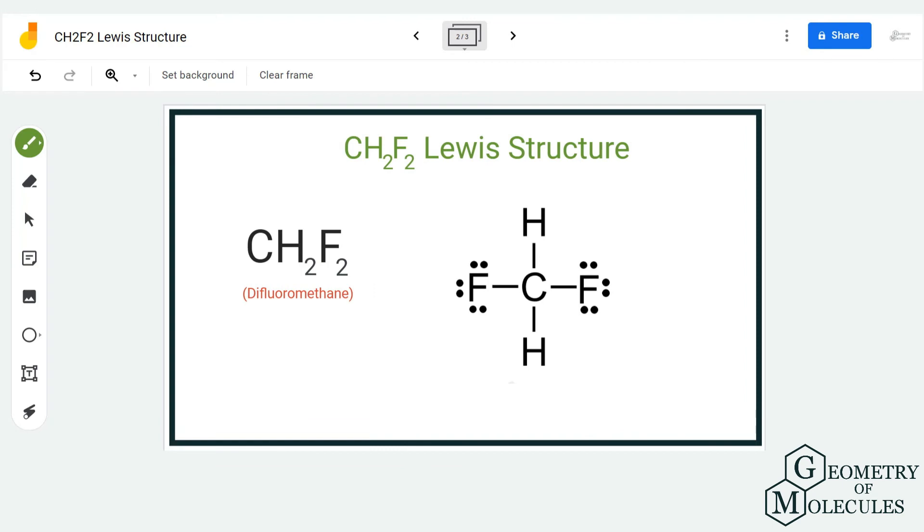Now let's see if the octets are complete. Fluorine atom here has eight valence electrons after sharing one electron with carbon. Hydrogen atom has two valence electrons in its outer shell and has attained a stable structure. Carbon atom, as it is sharing four valence electrons with four atoms, has a complete octet. So as all...